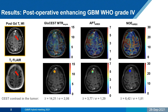Similarly, in the second patient with an enhancing tumor, we could also see an overall increase in glutamate-weighted CEST contrast, corresponding to the contrast-enhancing lesion that can be seen in the post-contrast T1 on the upper left corner. And as expected, we also saw an overall increase in APT and decrease in NOE contrast in this same contrast-enhancing lesion.